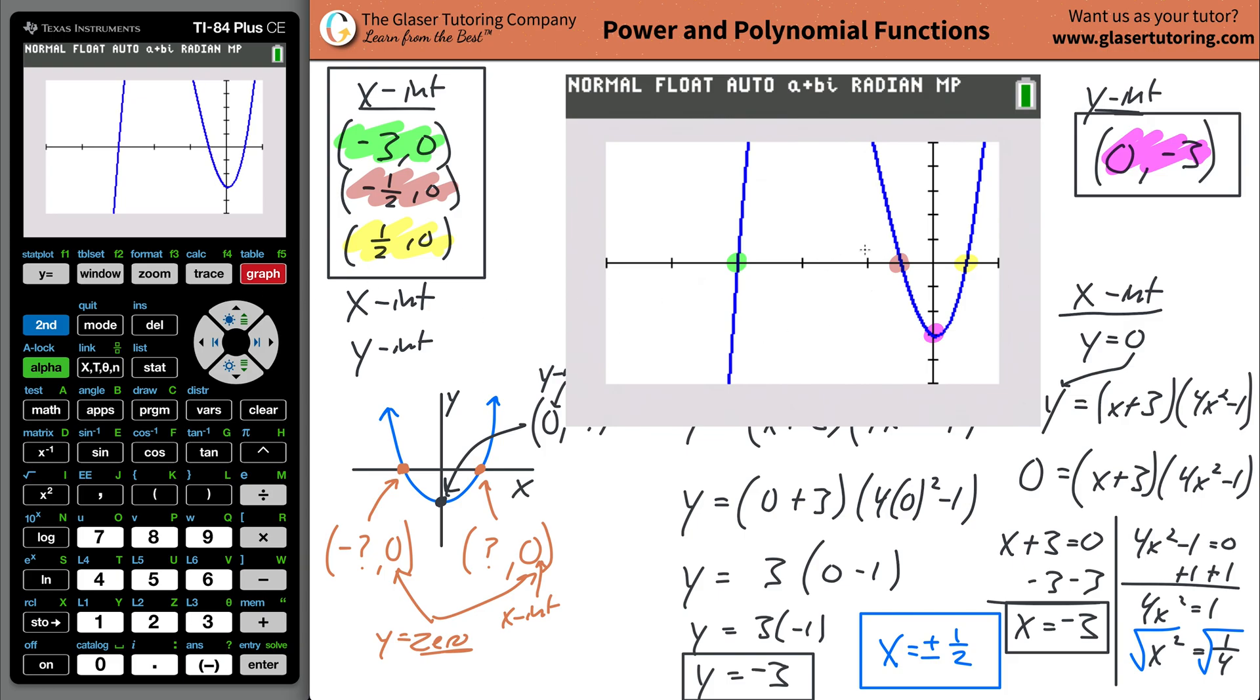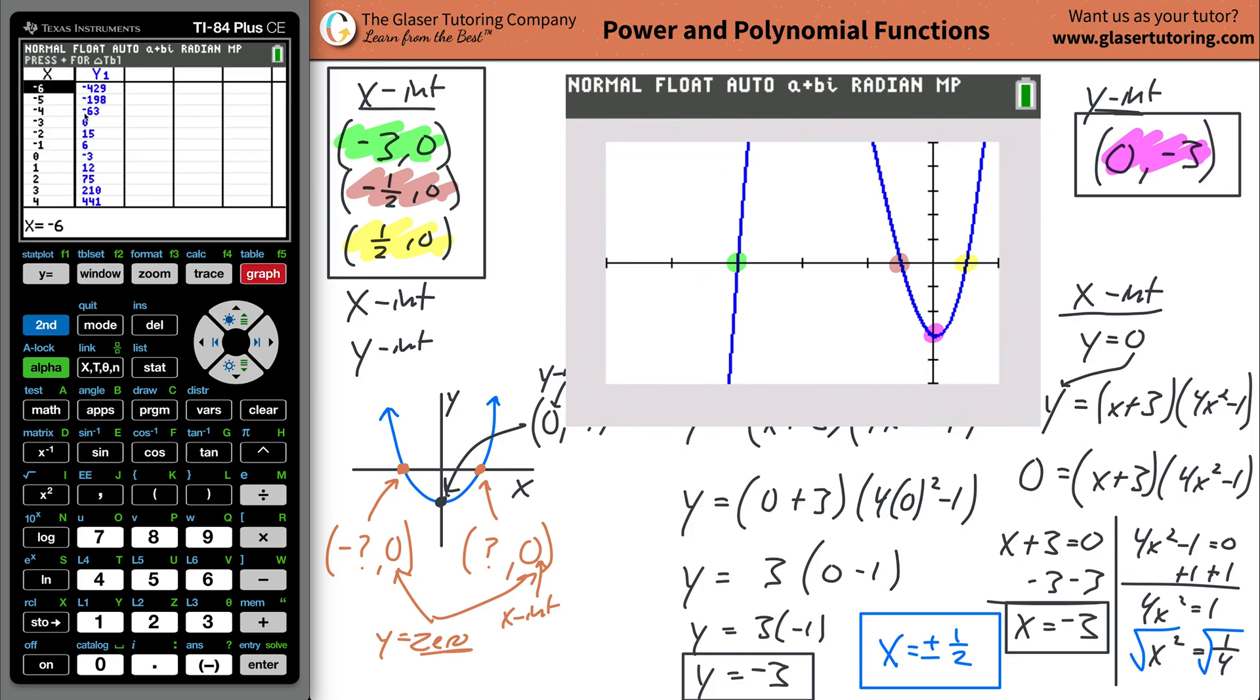You can also, by the way, instead of using the graph, but you should get an idea, this is actually a cubic function. If you wanted, you go to hit second table. And now what you should start to see is, well, you might actually have to step your table a little better. You got to go by half. Otherwise, we're not going to find.